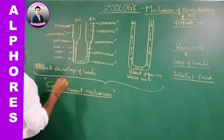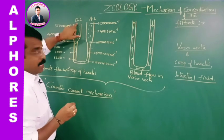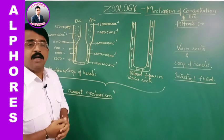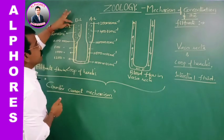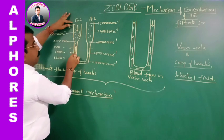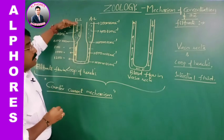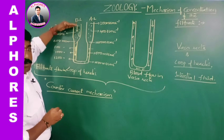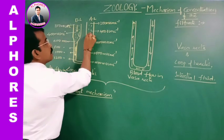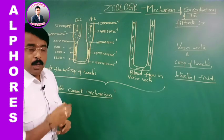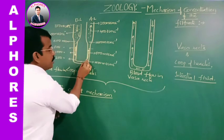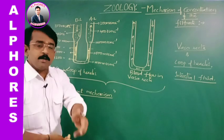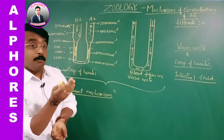The concentration in the descending limb — in which the primary urine flows from outer medulla to inner medulla — progressively increases. In the ascending limb, the filtrate flows from inner medulla to outer medulla. These are parallelly running limbs but with opposite flow — that is counter-current.